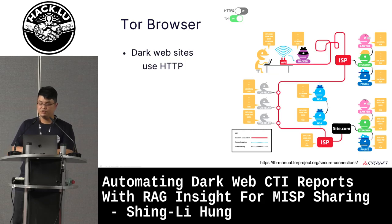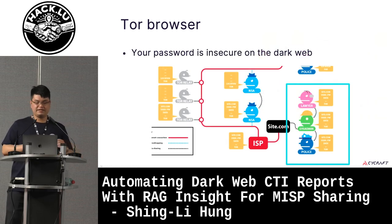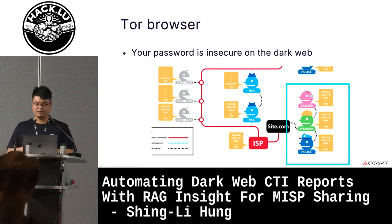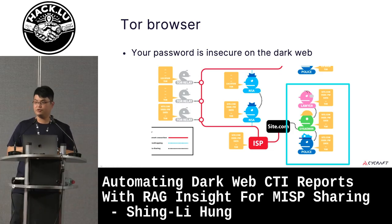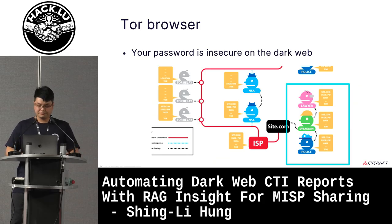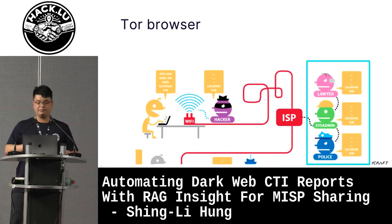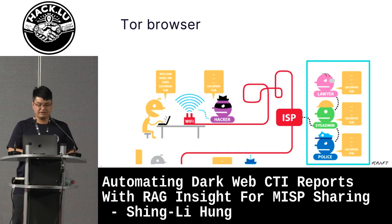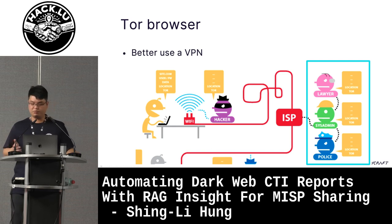The dark web uses HTTP to communicate, which means your password is insecure on the dark web. The final Tor relay will reveal your login information, so anyone can see your password. Also, at the beginning of the connection, your ISP will know that you are connecting to a Tor node, so you should use a VPN or a proxy.